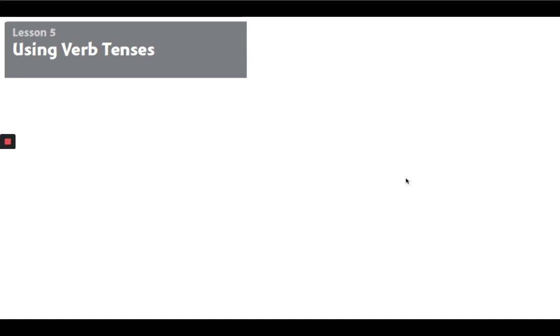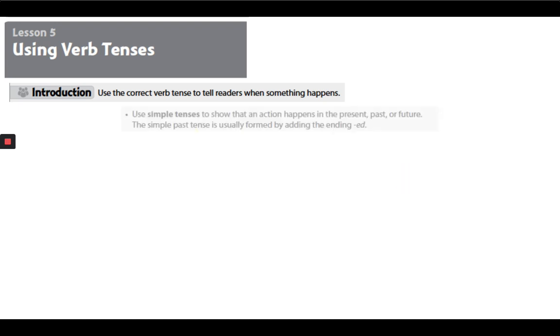Hello class, so today we're talking about using verb tenses. Use the correct verb tense to tell readers when something happens. Use simple tenses to show that an action happens in the present, past, or future. The simple past tense is usually formed by adding the ending -ed.